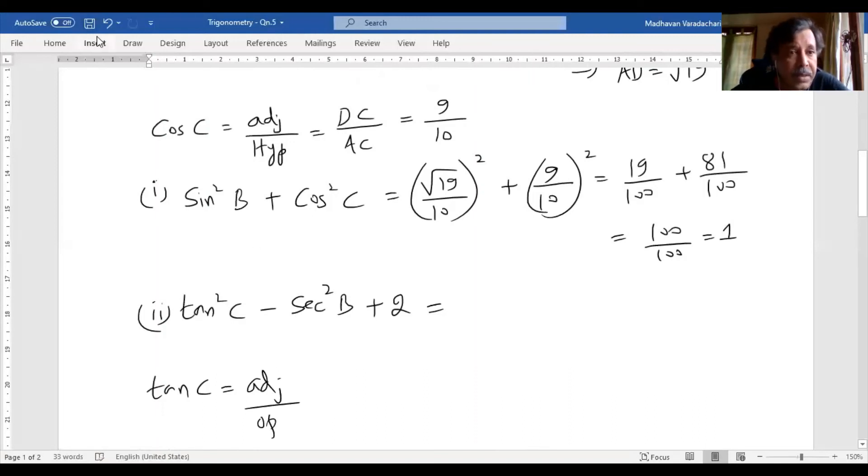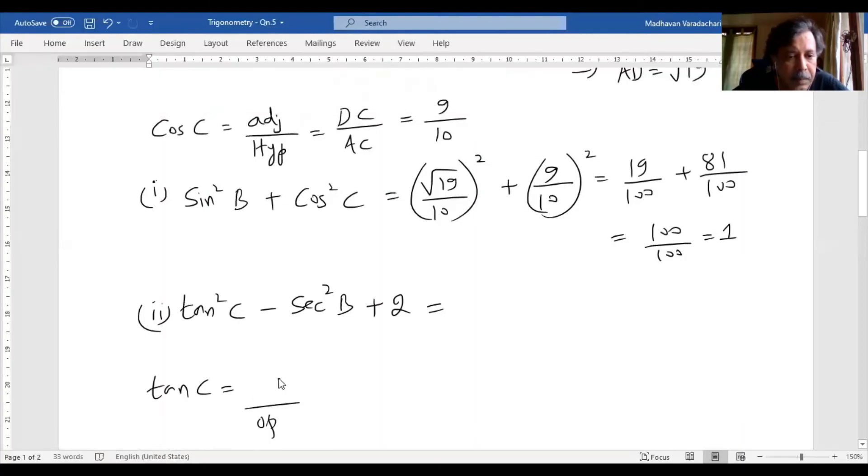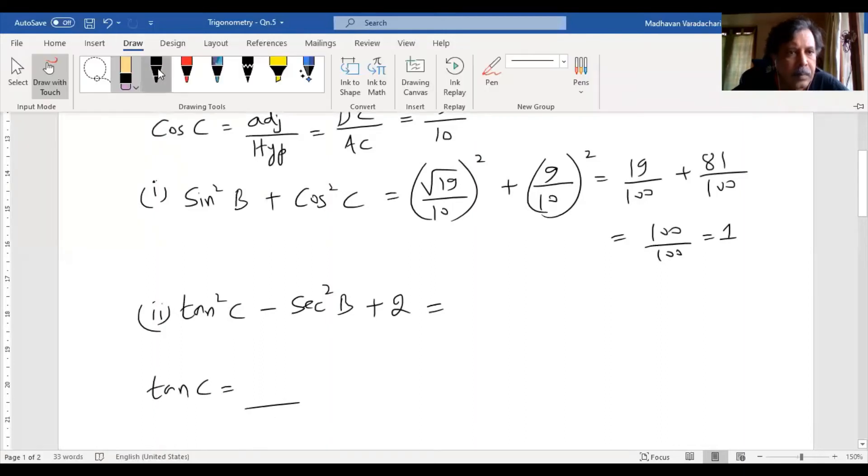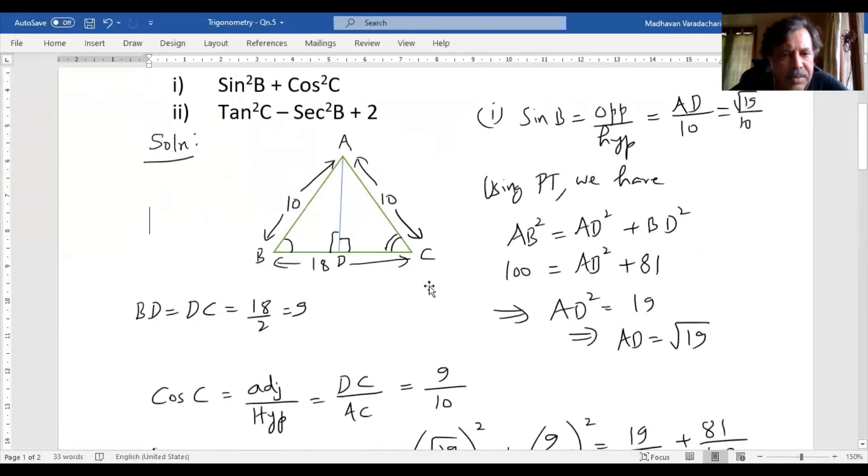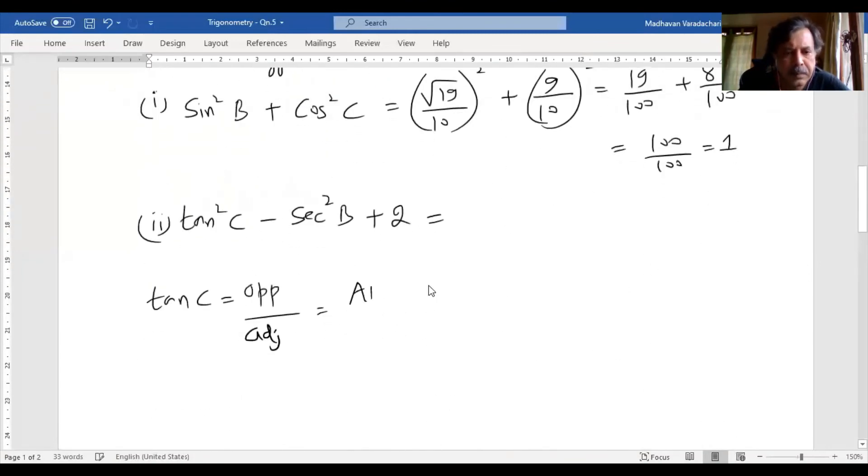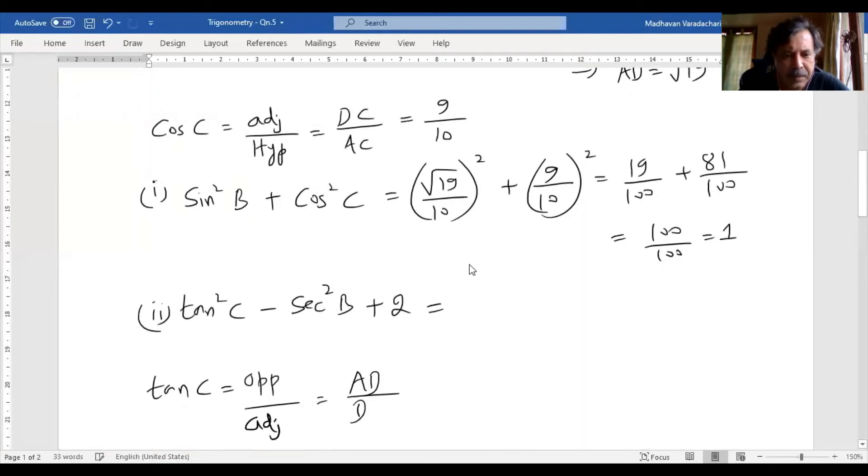I'm sorry, opposite by adjacent. Let me just rub this. Opposite by adjacent. So for angle C, what is opposite? Opposite is AD. What is adjacent? For C, adjacent is DC which is 9 basically. So the denominator is 9. What is AD? I think we found here root 19. And this implies tan square C will be 19 divided by 81.